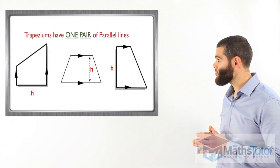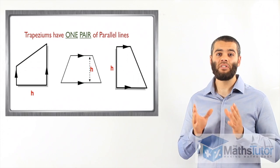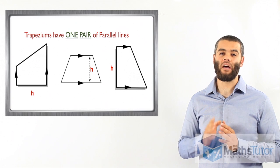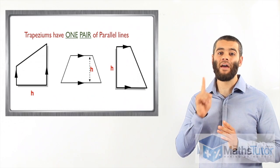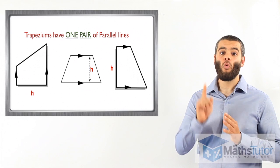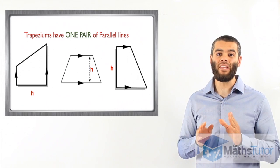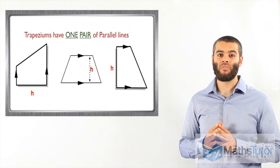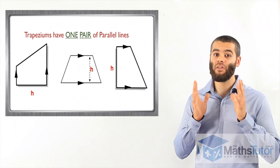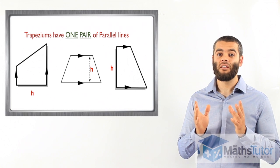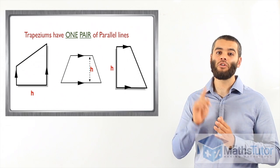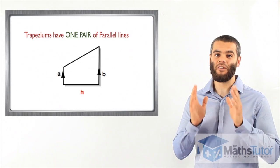Let's look at the diagrams. A trapezium has one pair of parallel lines — that's it, one pair. So if you see a quadrilateral, a four-sided shape, and it has one pair of parallel lines, straight away think: this is a trapezium. Whenever you see a four-sided figure with one pair of parallel lines, you know straight away it is a trapezium.